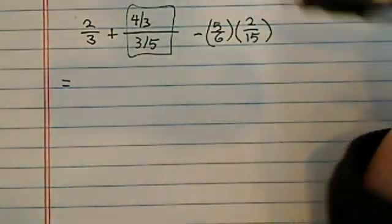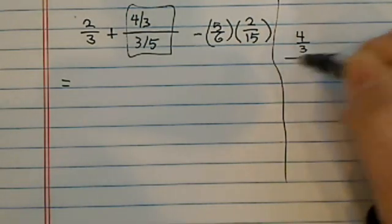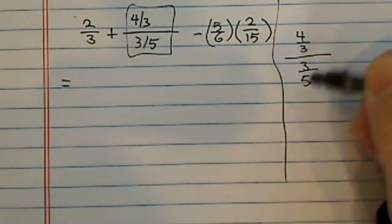This is a messy part. It's a fraction over a fraction. So let's put it on the side and take a look at what we do with a fraction that's stacked on top of each other.